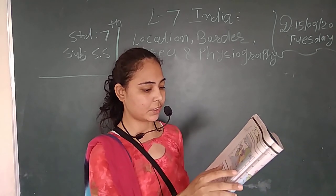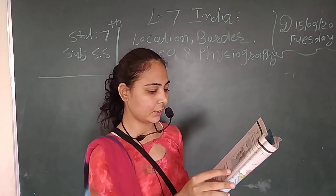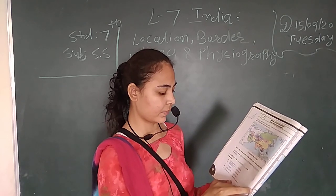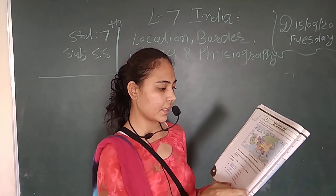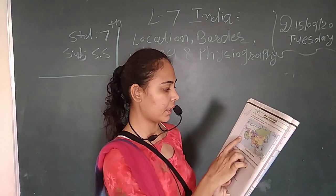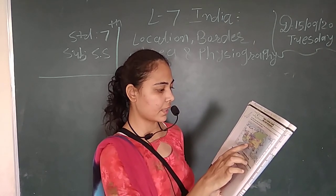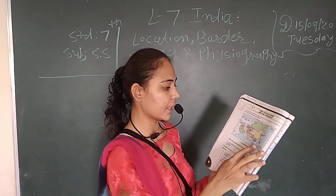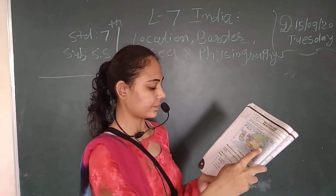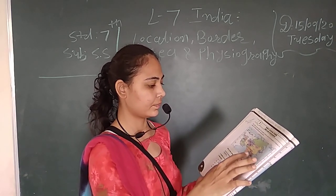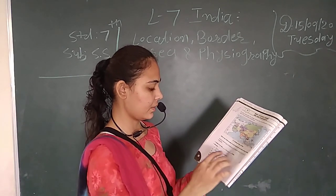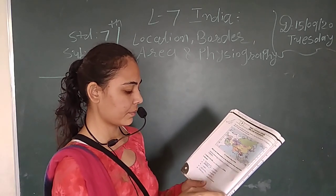India's directions — North, South, West, East. Bangladesh is to the east. North is Nepal, South is Sri Lanka. Countries to the North-West: Pakistan.